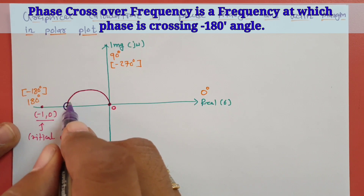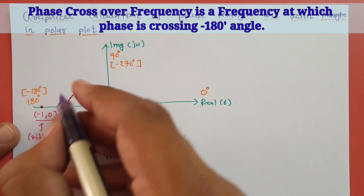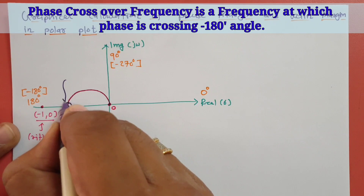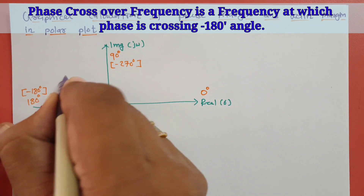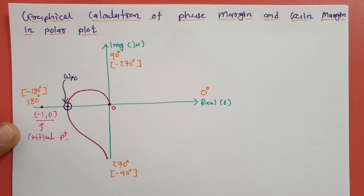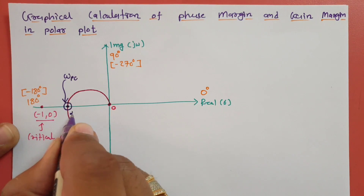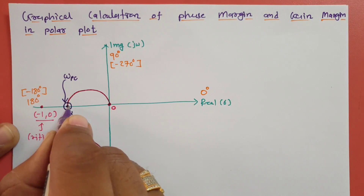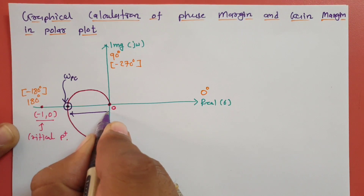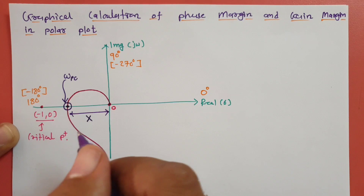So here in this polar plot, the phase is crossing minus 180 degrees at this point. We can say this point corresponds to the phase crossover frequency. Once we have this phase crossover frequency, the distance with respect to the center at that point is the magnitude. Let us say this distance is x, so the magnitude is x.